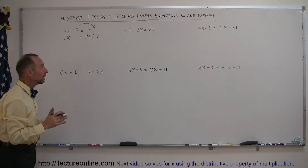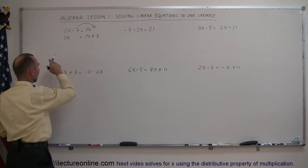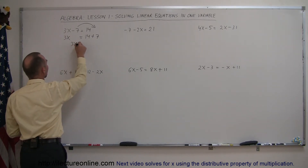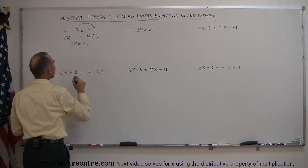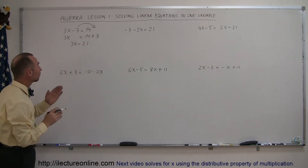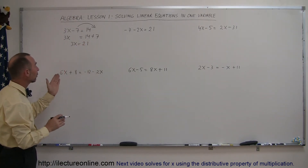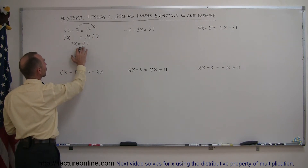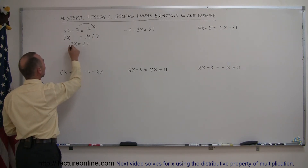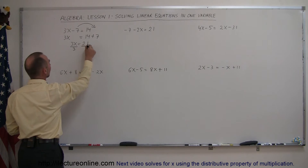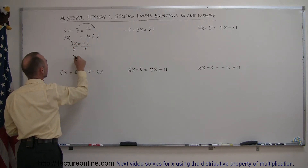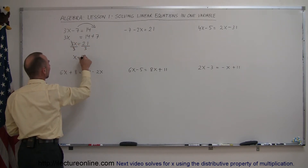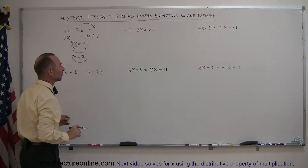The next step is to combine like terms. On the left side we have 3X; on the right side we combine 14 plus 7, which is 21. Then we divide both sides of the equation by the numerical coefficient, the number in front of the variable. We divide both sides by 3; these cancel out and we have X equals 21 divided by 3, which is 7. That makes the left side equal to the right side.